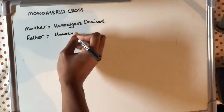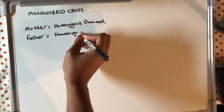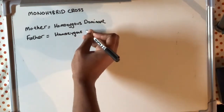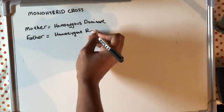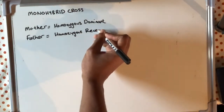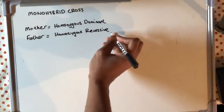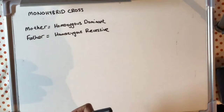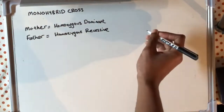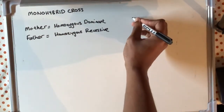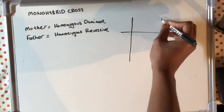What I would suggest you do is familiarise yourself with some of the terms used when looking at Punnett squares, such as homozygous, dominant, recessive, heterozygous, allele, and gene.